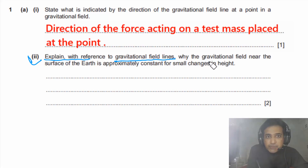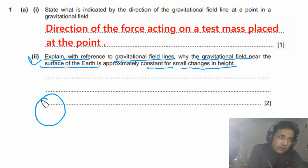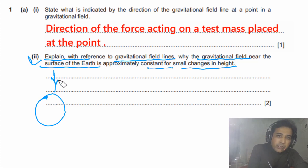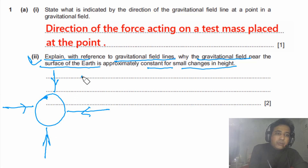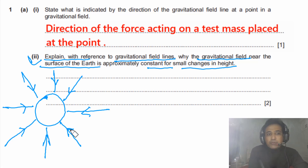Part b: explain, with reference to gravitational field lines, why the gravitational field near the surface of the Earth is approximately constant for small changes in height. To answer this, imagine we have a planet and draw its gravitational field lines. We then consider observers at different distances from the planet.